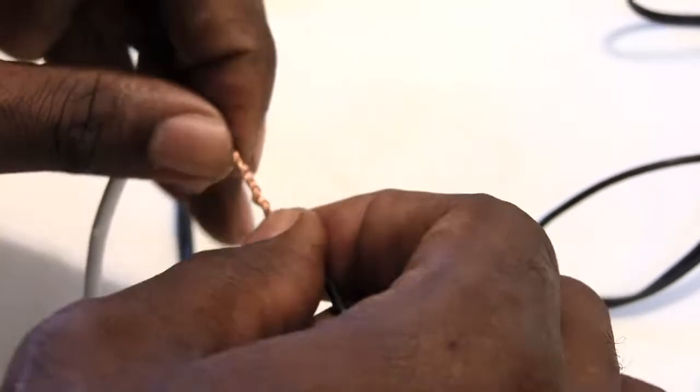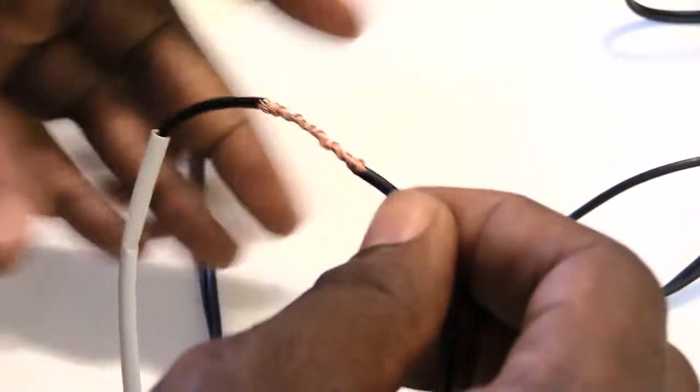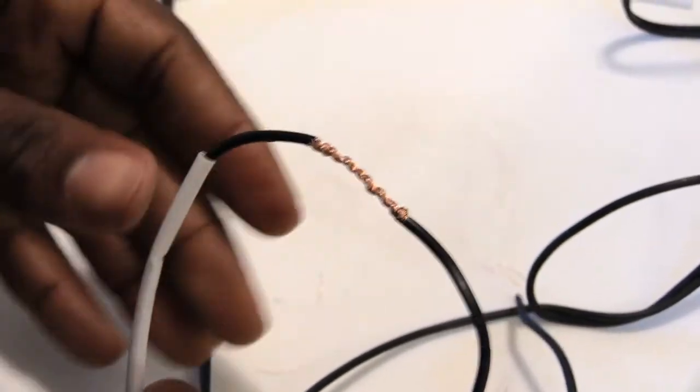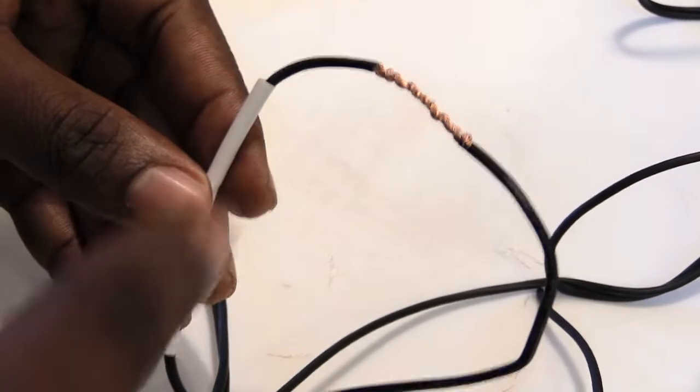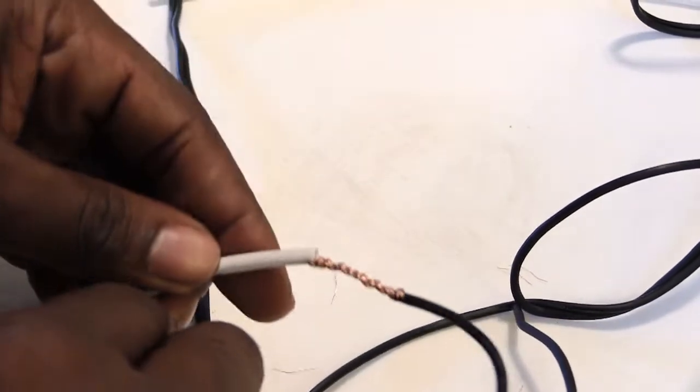Of course if you don't have heat shrink tubing you can use electrical tape over this piece. But since I have this, that's why I put the tubing on first. Now that it's one piece I can just slide this tubing over top of the splice.